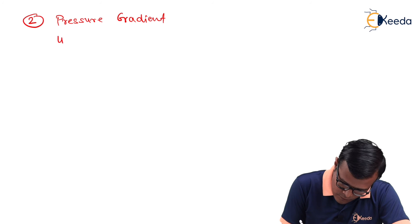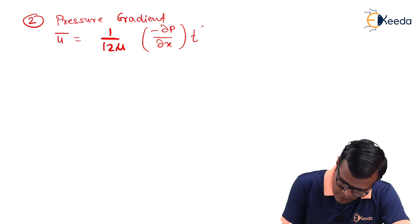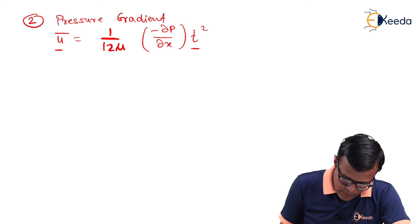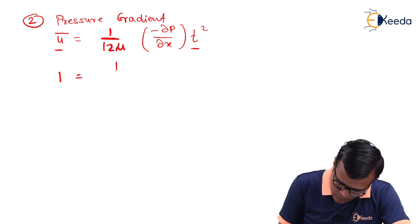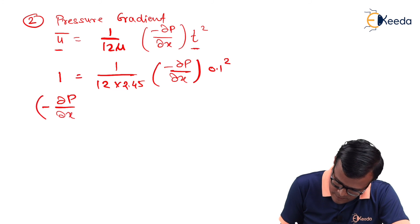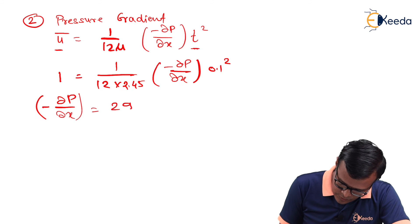We will start with second term to be calculation as pressure gradient. For that purpose we will use relation ū is equal to 1/(12μ) × (-dp/dx) × t². This is the relation between two terms ū and t². Putting value of ū as 1, 1/(12μ) value is 2.45 × (-dp/dx) × thickness is 0.1². We can have value as dp/dx as 2940.